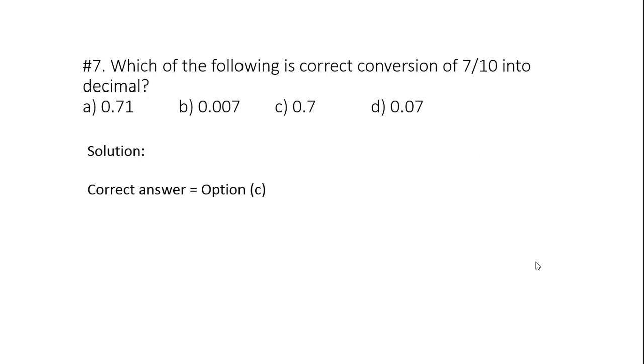Question 7: Which of the following is correct conversion of 7 by 10 into decimal? It doesn't need much discussion. 7 by 10 is simply equal to 0.7, so option C is the right answer.